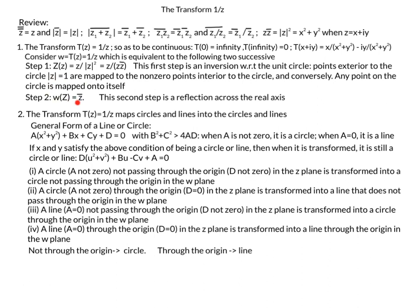The second function that composes to give t of z is w of z, taking the capital Z from step one and taking its complex conjugate. The second step is a reflection across the real axis. We will also find that t of x plus iy equals x over x squared plus y squared, minus i times y over x squared plus y squared.